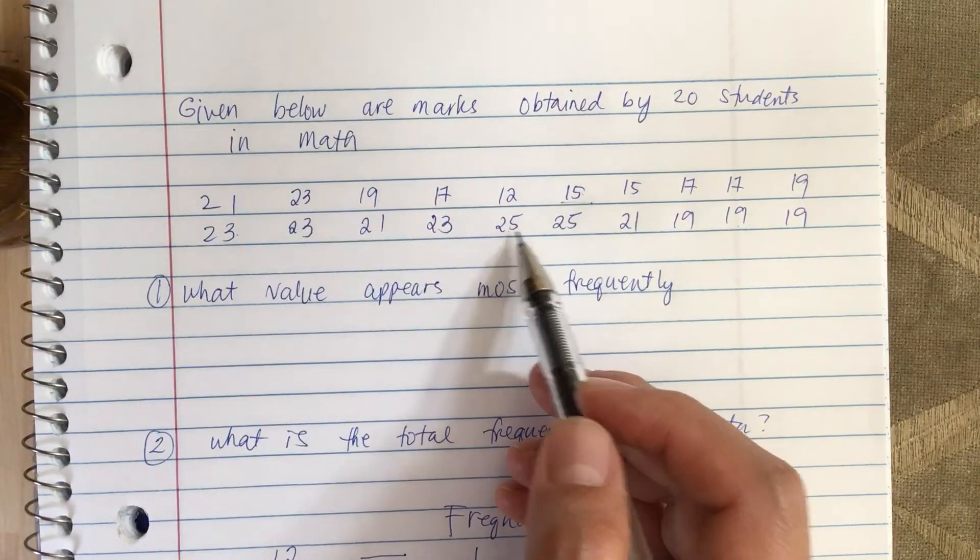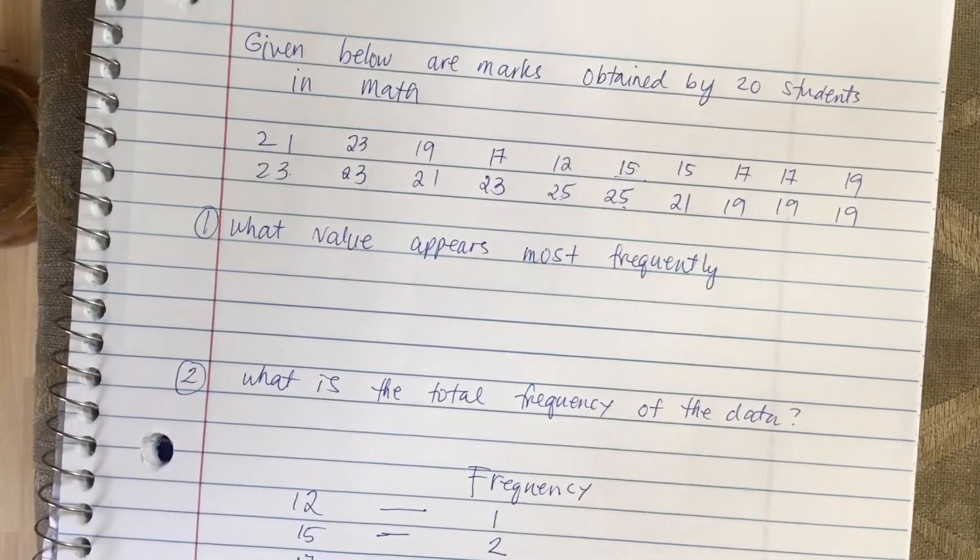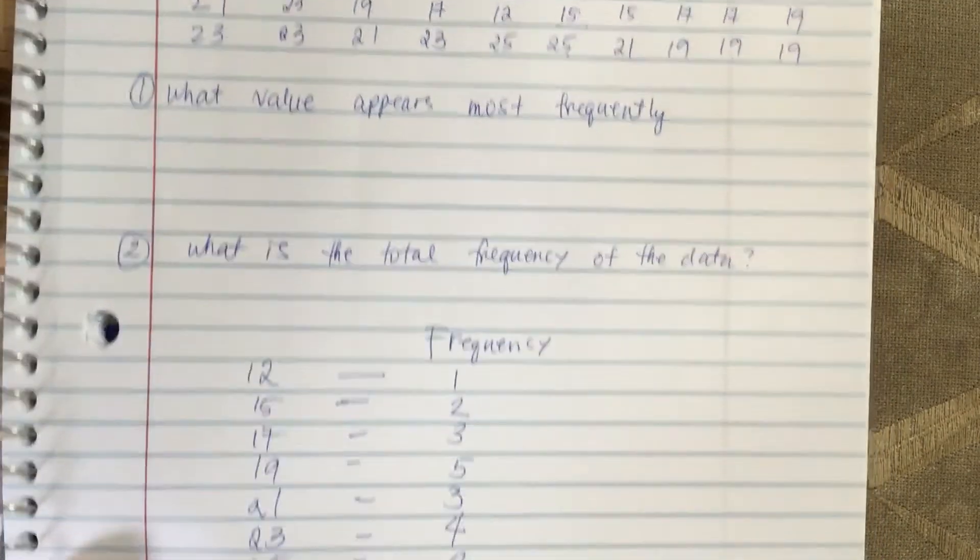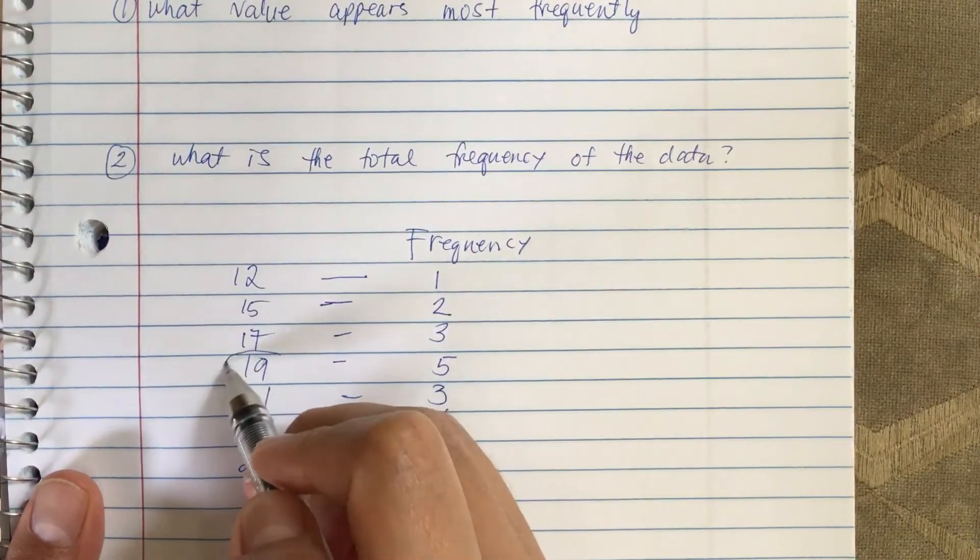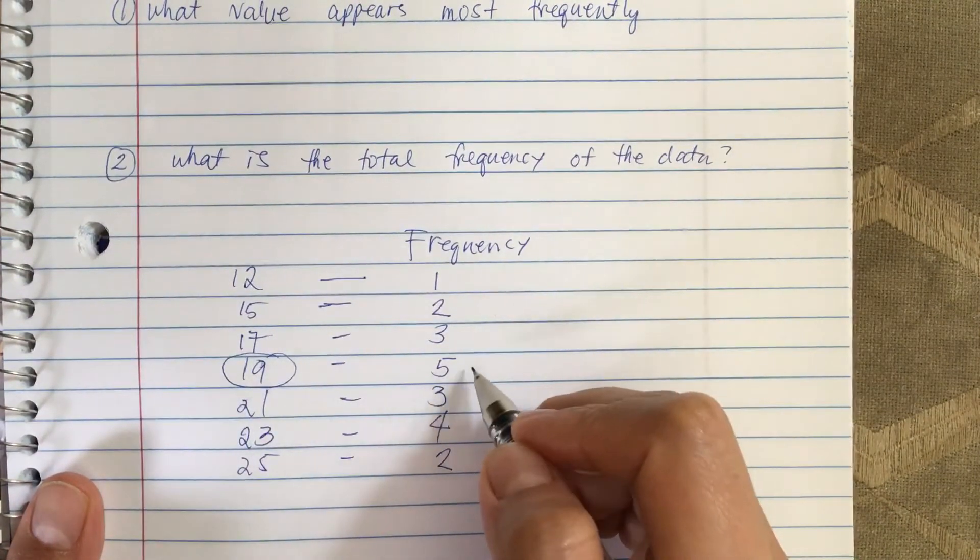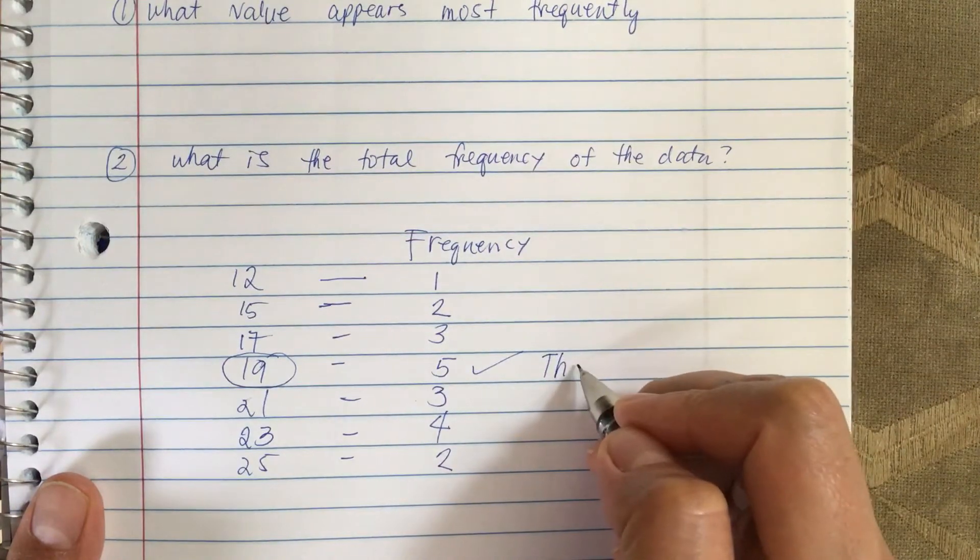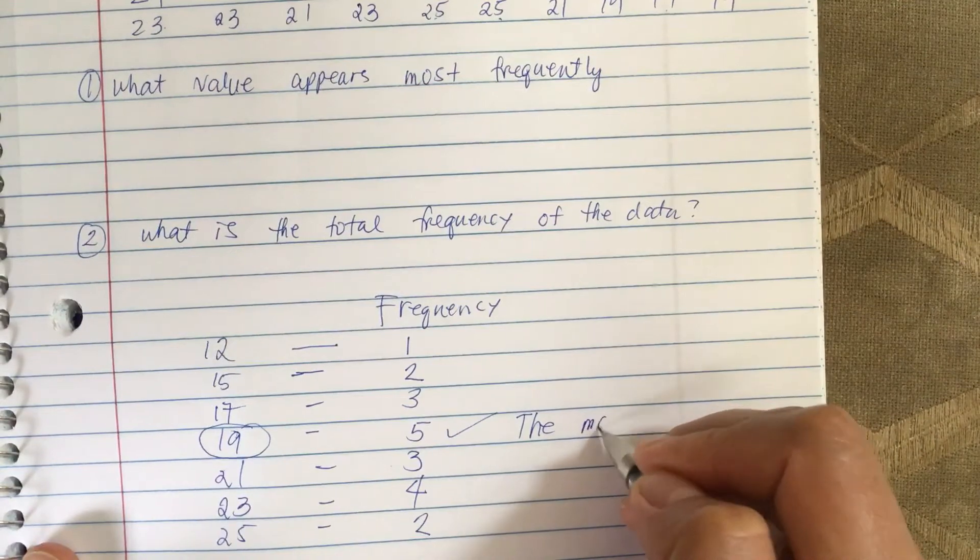So now what value appears most frequently? The most popular number is 19, because there are five of them. So this is the most frequent. Answer: 19.